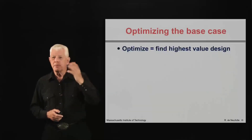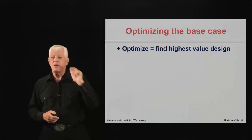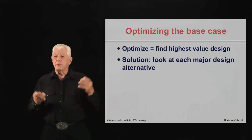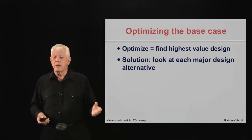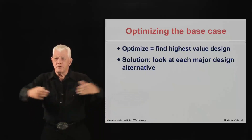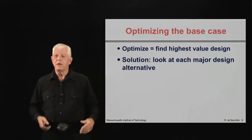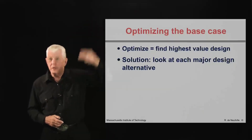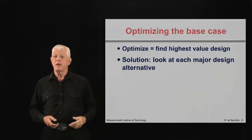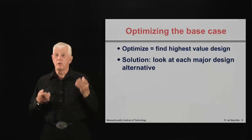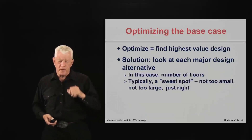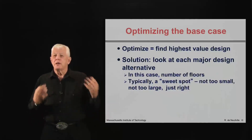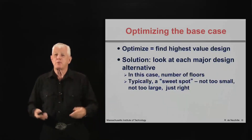So they will optimize it — find the highest-value design. That's what optimization means. In this case, you can do it fairly straightforwardly because the design variable, given a fixed area, is how many floors you have: 1, 2, 3, 4, 6, 7, 8. You can look at those cases and figure out which is the best one. Typically in this kind of design situation, you have some kind of sweet spot. If you build it too small, you don't have enough revenues to justify the cost. If it's too large, you may have a white elephant. Somewhere in the middle, there is a sweet spot.